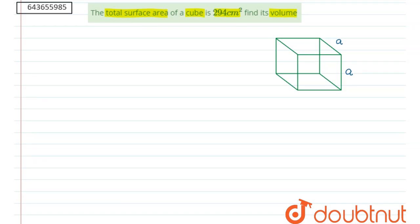Here is a figure of a cube of side length a. We know that each face of a cube is a square and each side of cube is of equal length.